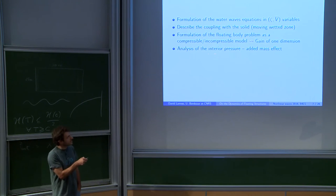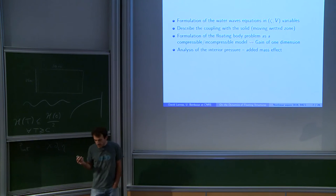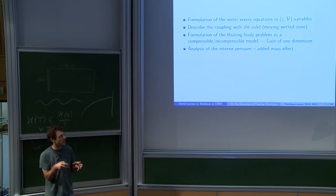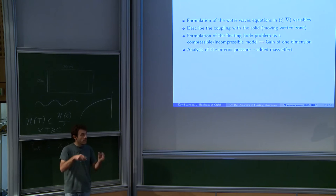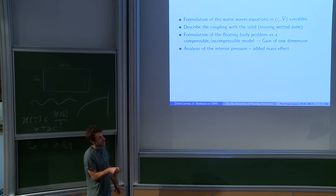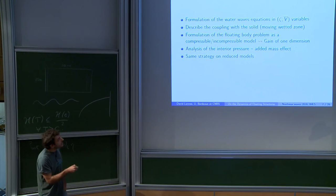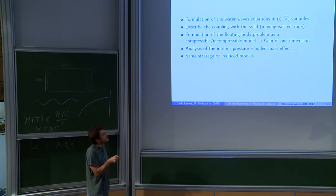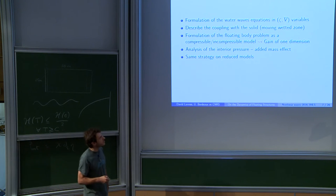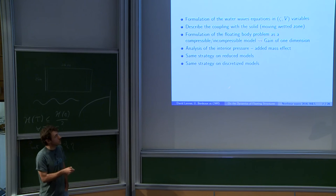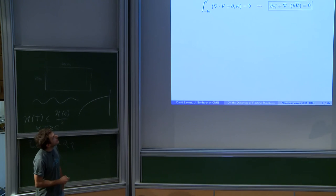Then I will analyze this interior pressure and show the added mass effect, which is a priori not obvious. In the case of a floating structure, you don't know which part of the fluid the body has to accelerate, so it's more complicated. I will show that this strategy — to see the interior pressure as a Lagrange multiplier — can be applied to a reduced model like the nonlinear shallow water equation that Thomas mentioned, and also to a discretized model, giving very efficient numerical codes.